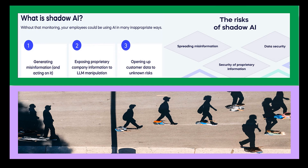Other examples include voice assistant devices that eavesdrop on conversations to enhance product recommendations, cybersecurity systems that scan emails for suspicious patterns, and autonomous drones that monitor public spaces for surveillance. Though these technologies offer numerous benefits, they also raise serious concerns about transparency, accountability, and trustworthiness. There is growing pressure to regulate Shadow AI, foster greater oversight and scrutiny, and ensure its impact aligns with fundamental values of fairness, dignity, and respect for human rights.